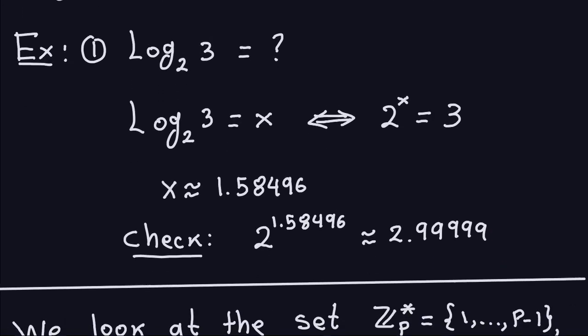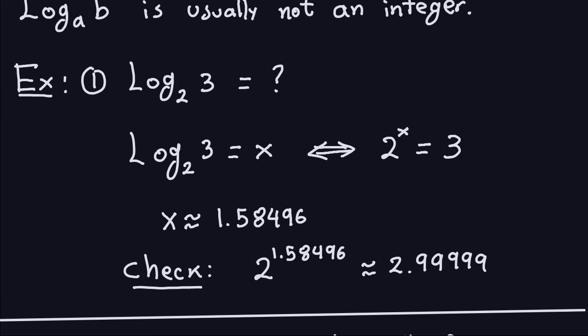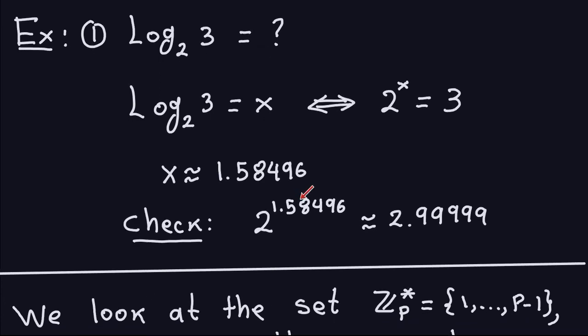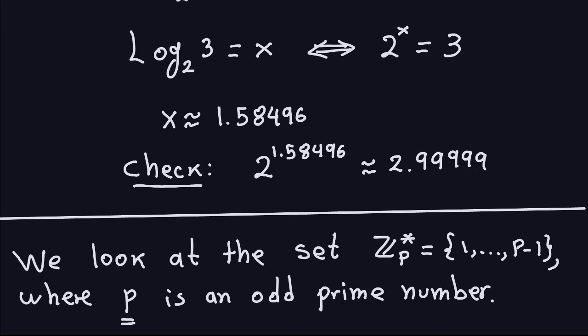That's the review of logarithms. The discrete logarithm problem involves logarithms in a discrete way, which comes from multiplication modulo a number. Now let's look at the set Z_p*, which consists of all the numbers from one to p minus one, where p is an odd prime. This is like Z_n (numbers from zero to n minus one) but without the zero — that's why we use the star.